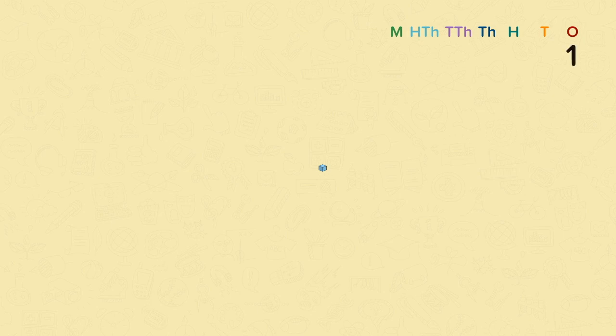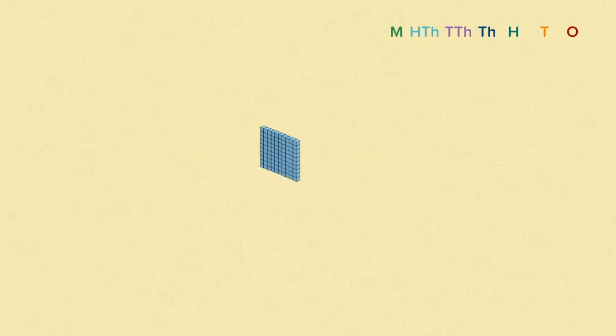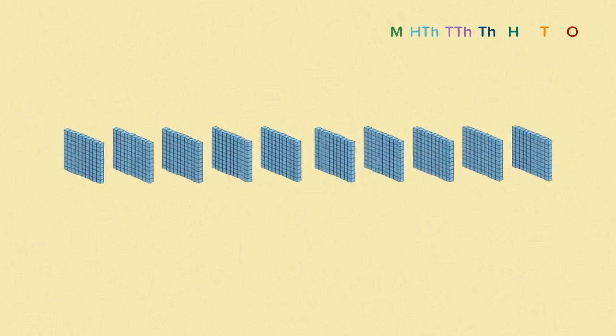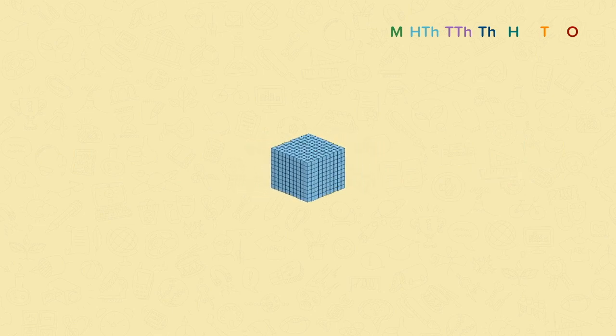Let's look at place value represented as cubes in a model. This is one cube. Here we have ten ones. Ten ones is the same as one ten. Now we have ten tens. Ten tens make up one hundred. And ten hundreds make up a thousand.